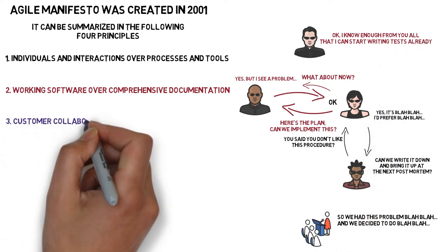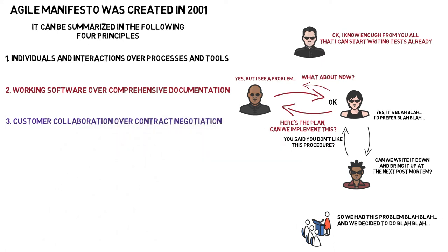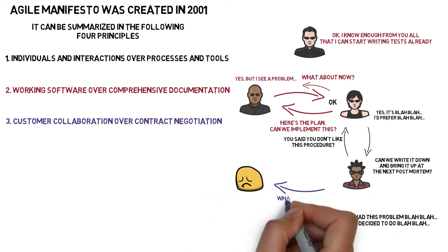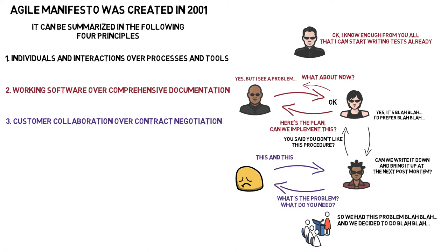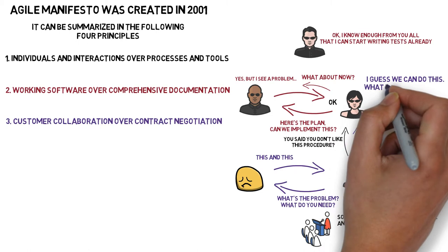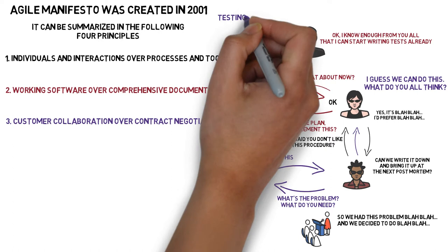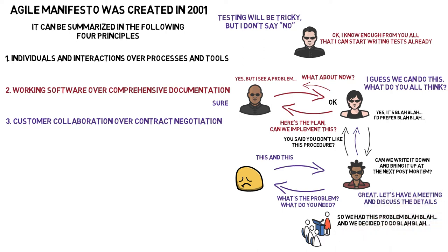3. Customer collaboration over contract negotiation. Gathering requirements far ahead before their implementation and turning them into a set of tasks which the developers should stick to is downplayed in favor of a more direct connection to customers and/or their representatives, so that they can be asked which solution they prefer from a set of possible options, at a moment closer to when the given solution is going to be implemented. And they can also try out the implemented feature much faster, even before the final product is ready, and leave feedback for the team so the product might be improved more to the liking of the customer without much drama.